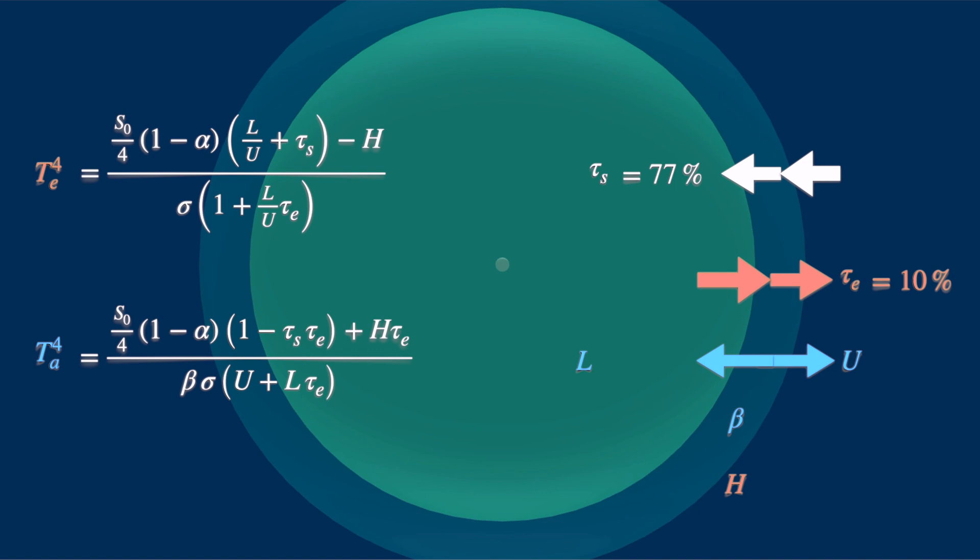For beta, we make use of Kirchhoff's law and say that since the atmosphere absorbs 90 percent of the long wave radiation, this is the radiation from the Earth, its emission is also equal to 90 percent.